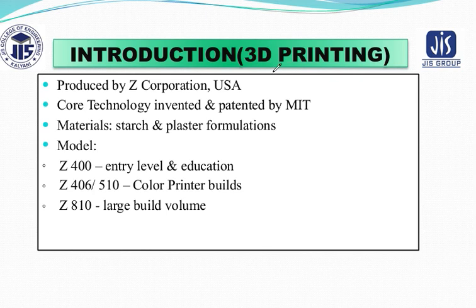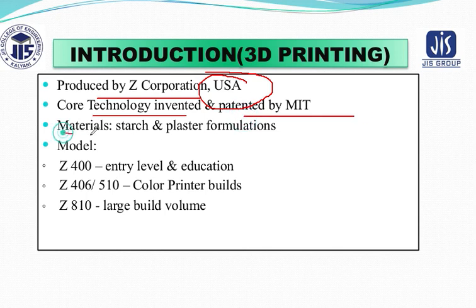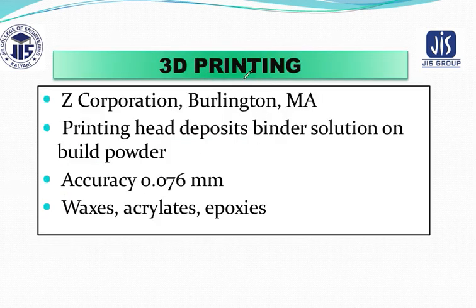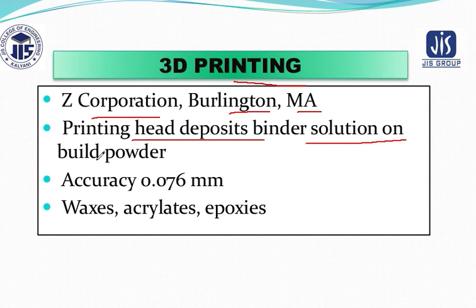Now let us have a look at the introduction to 3D printers. It was produced by Z Corporation, USA, and the core technology was invented and patented by MIT. The materials preferred were starch and plaster formulations. The models introduced were Z400 for entry level and education, Z406 for color printing builds, and Z810 for large build volume. The printing head deposits binder solution on build powder, the accuracy level is 0.076 mm, and wax, acrylate, and epoxies are various materials preferred.